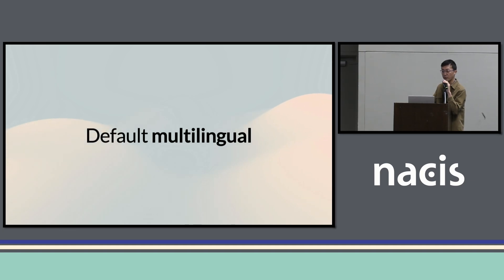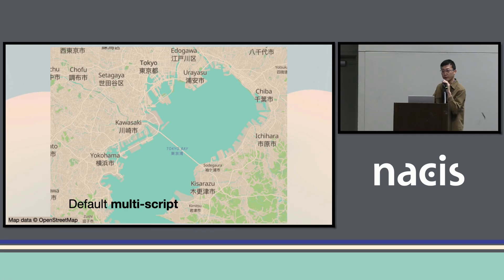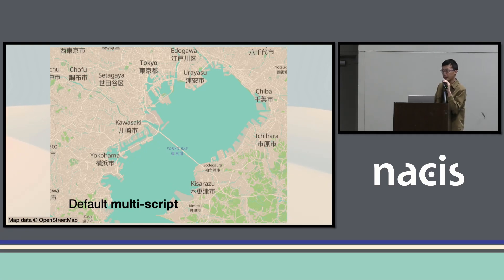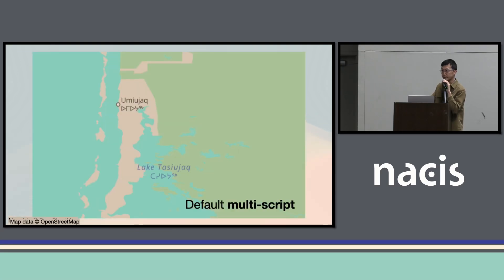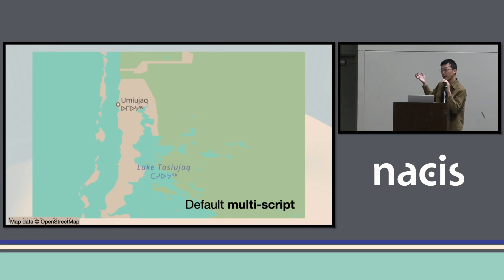This is especially important for multi-script — for example, in Japan, showing both the Romanized text and also the text in kanji, which makes the base map feel more cosmopolitan and is really useful for travelers and tourist applications. By default, the map is multi-script, so if you choose English, it will still show the local language script for all the labels. Multi-script also applies to more specific languages that come from OpenStreetMap. For example, Canadian Aboriginal syllabics — in some places in Canada, OSM has this data, so it is shown by default for all scripts. Even if you choose English, it will show more than one script.